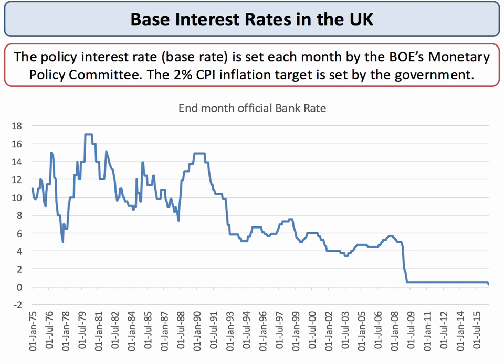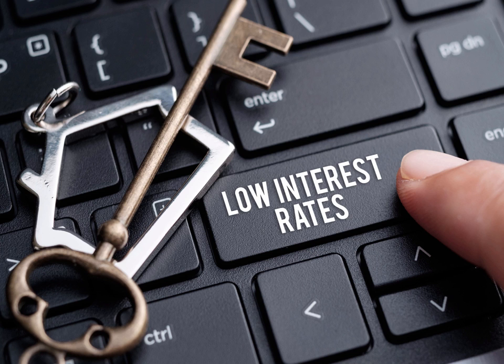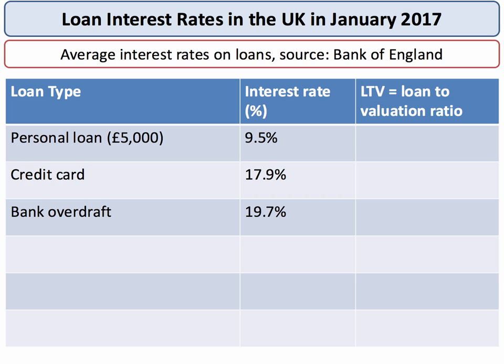The base rate is set by the Bank of England, but let's think about some other key interest rates in the money markets at the moment. Here are some interest rates taken on average for January 2017 — the data comes from the Bank of England. You have, for example, three types of loans shown here on the chart.